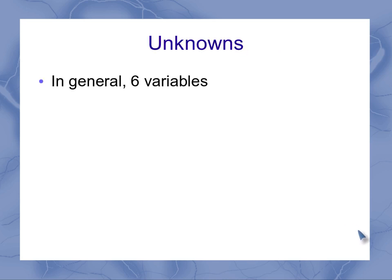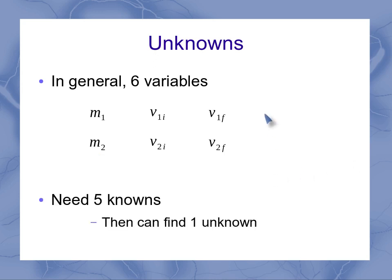So that means in general, we've got six variables. For mass one, we've got its mass and its initial and final velocities. For mass two, we've got the same thing, its mass and its initial and final velocities. If you have any five of these six, then we can use our equation to find the one unknown. We might have to do a little algebra, but we can find it.